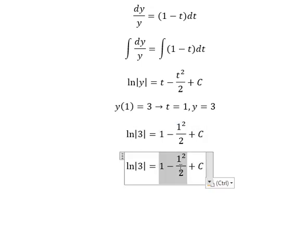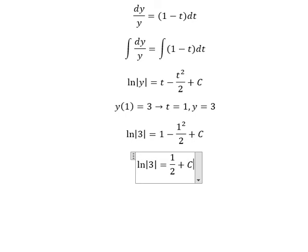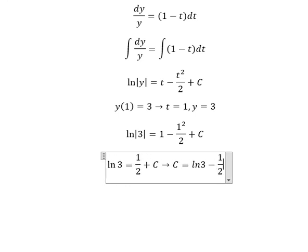This one we have one over two, this one we have ln number three. So we have C equals to ln number three minus one over two.